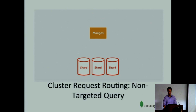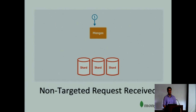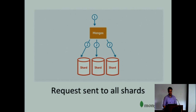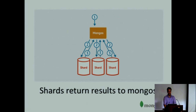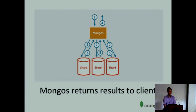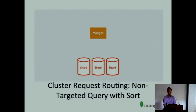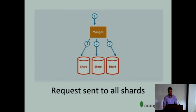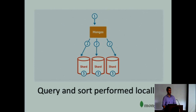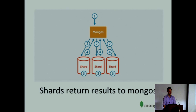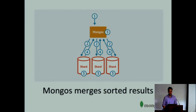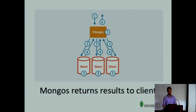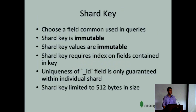A shard can be either a standalone MongoD instance or a replica set — in reality, almost always a replica set. The metadata about the cluster topology and where data lives is stored on config servers. You can get away with one config server if experimenting, but not for production. If a query can be identified as targeting exactly one shard, MongoS only sends it there. But if the data might live on several shards, MongoS fans out the request to all shards, accumulates all the results returned, and returns a coherent result to the originating client. If there's a sort associated with the query, it's performed locally on the shards, and MongoS does a merge sort to return the globally sorted view.